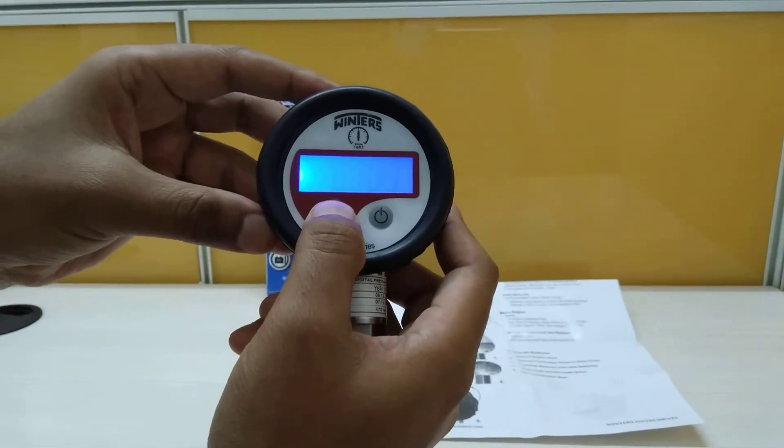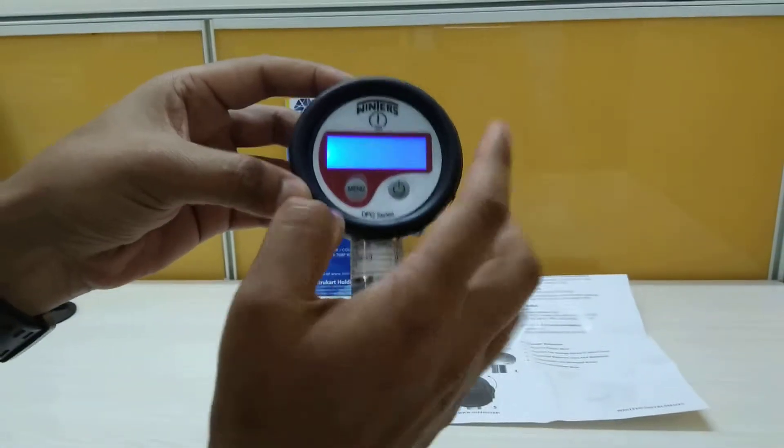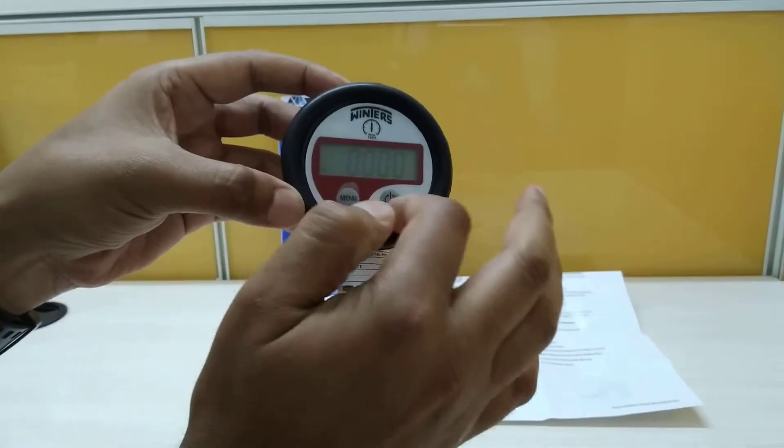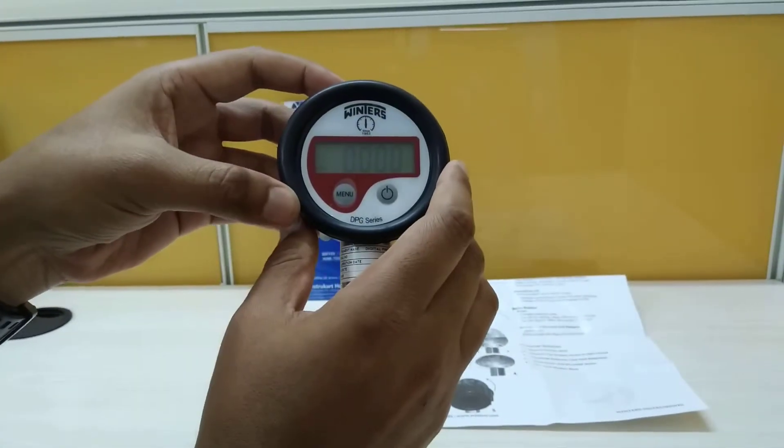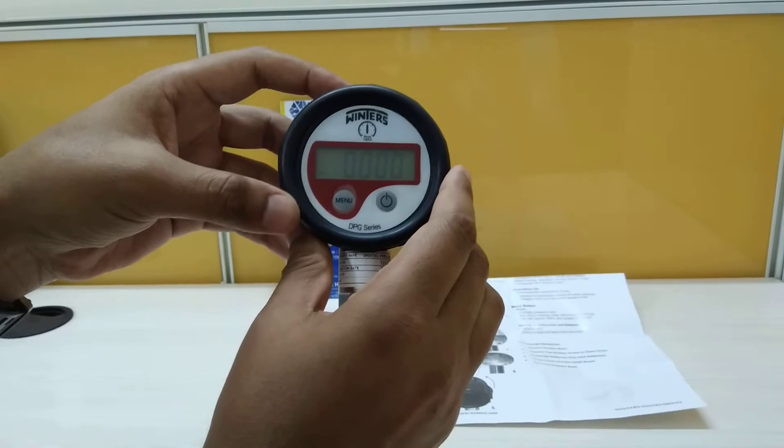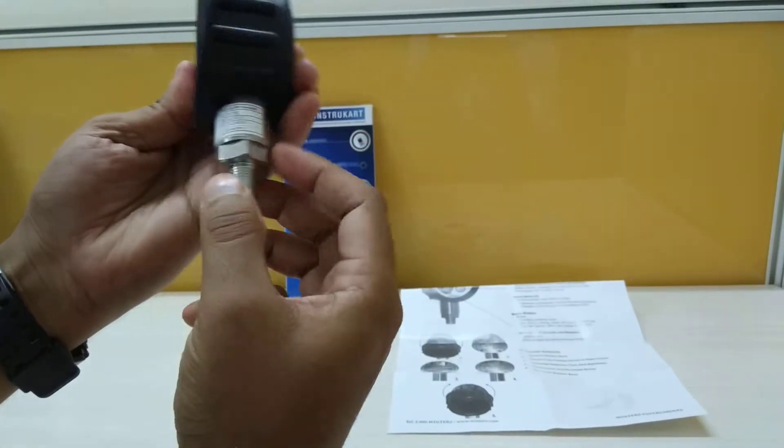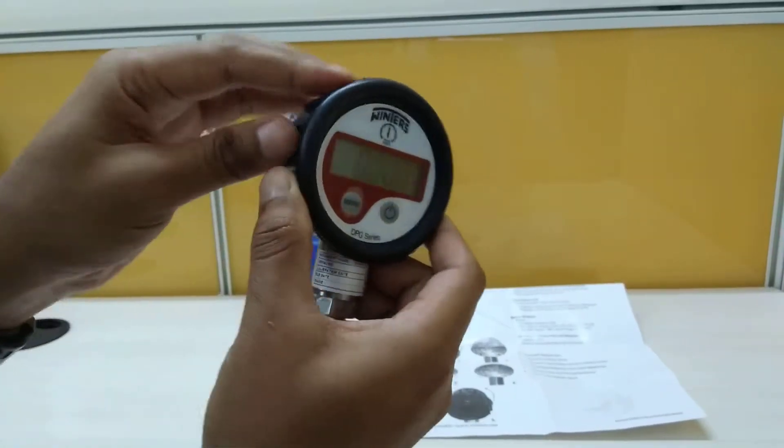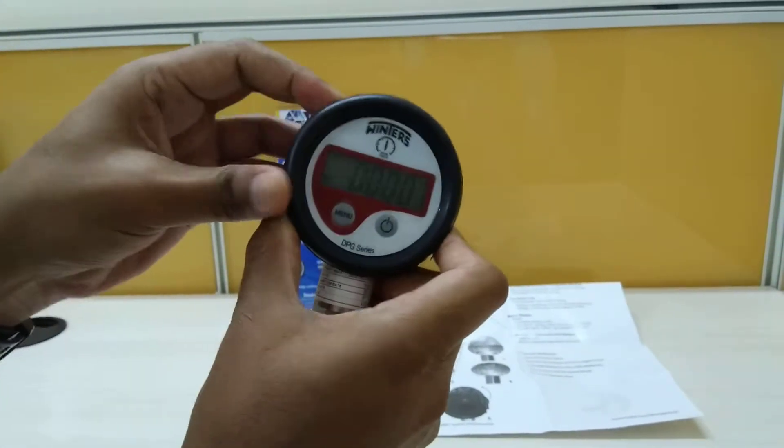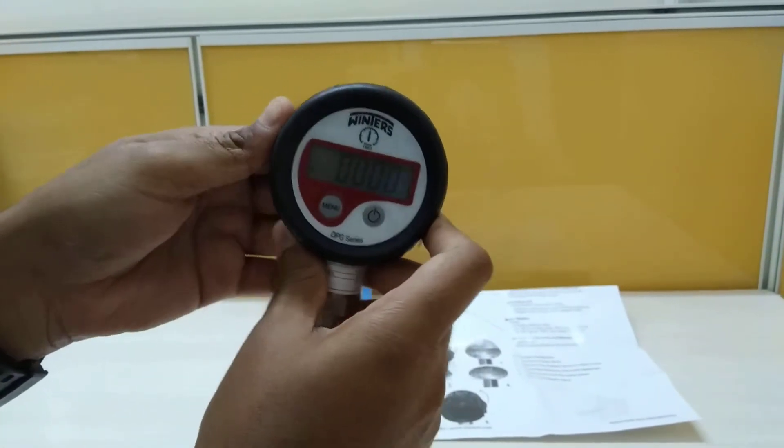This has got a case size of 2.5 inches and the case material is ABS IP64. The wetted part is SS 316. The case is rubberized material which is shockproof.